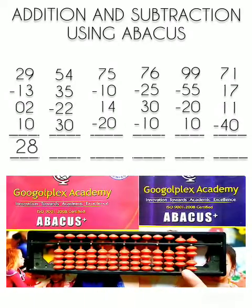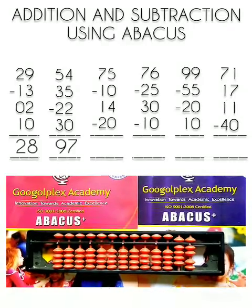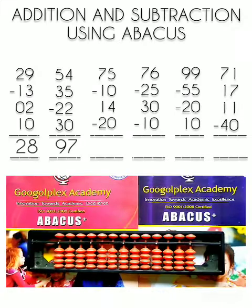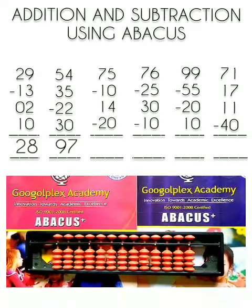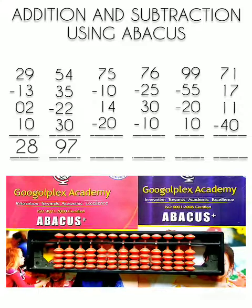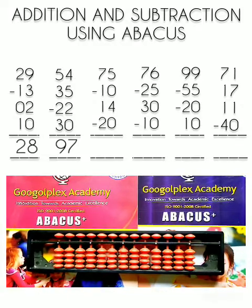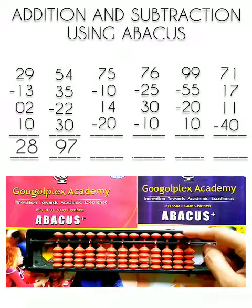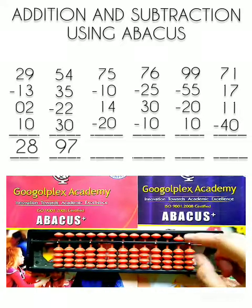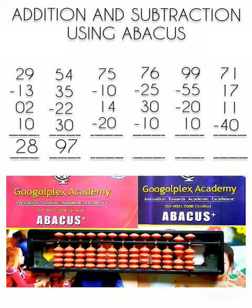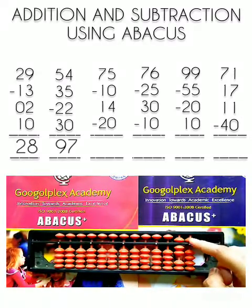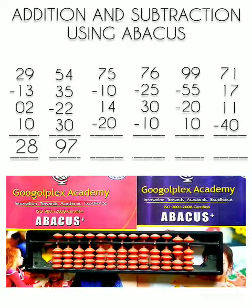Our answer is 97. 97 is our answer. Now question number 3. In question number 3 we have to solve 75 minus 10 plus 14 minus 20. First number is 75. For 75 we have to first add 70. This is 50 plus 20, this is 70, and for 5 we have to bring this bead down. Now this is 75.